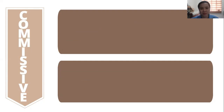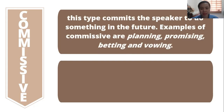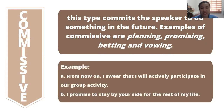The third type is commissive. This type commits the speaker to do something in the future or some future voluntary action. It reveals the intention of the speaker. Examples of this are planning, promising, betting, and vowing. For example: 'From now on, I swear that I will actively participate in our group activity.' Or 'I promise to stay by your side for the rest of my life.'